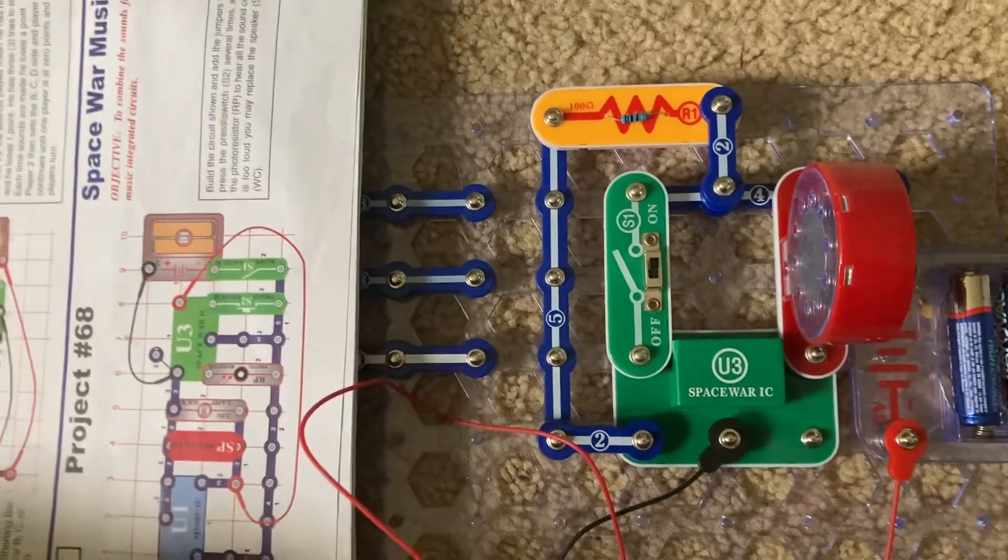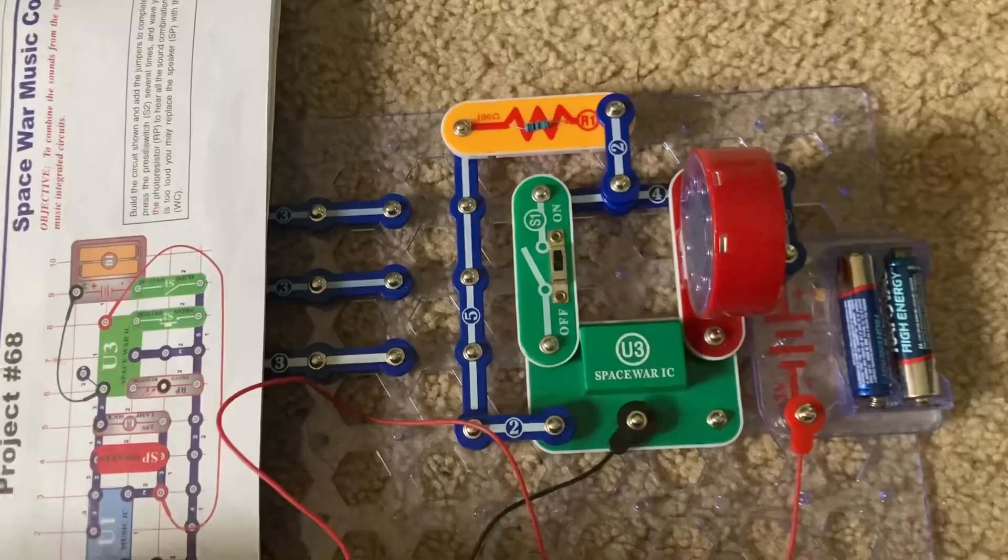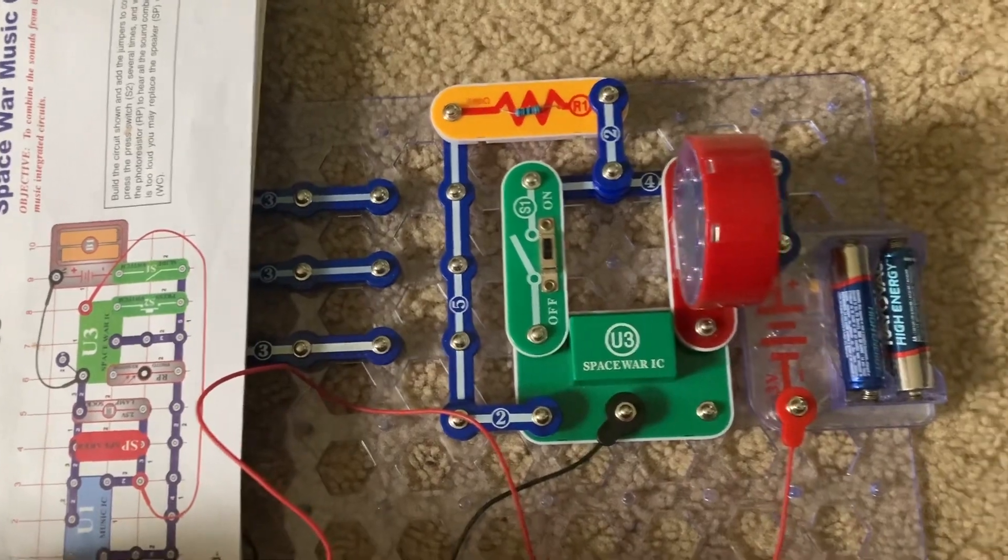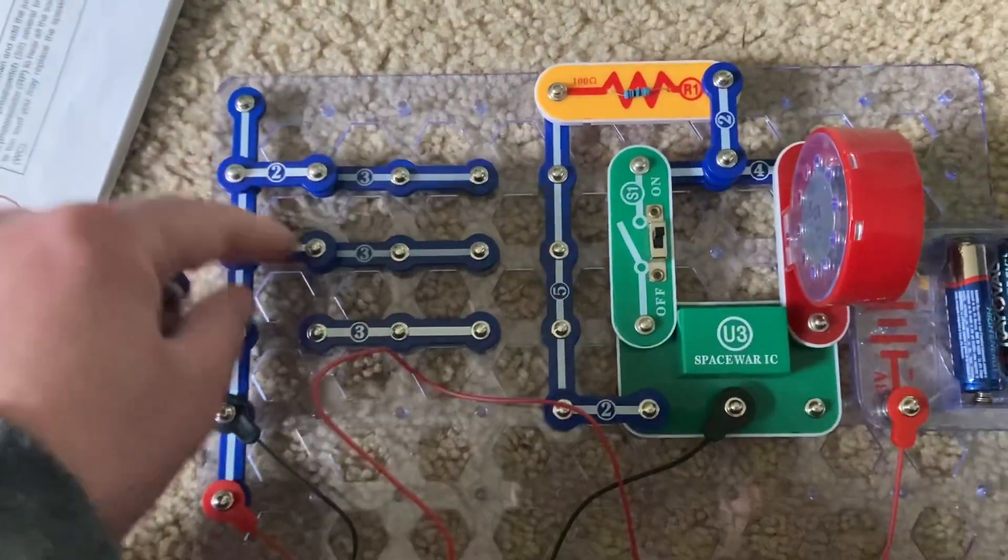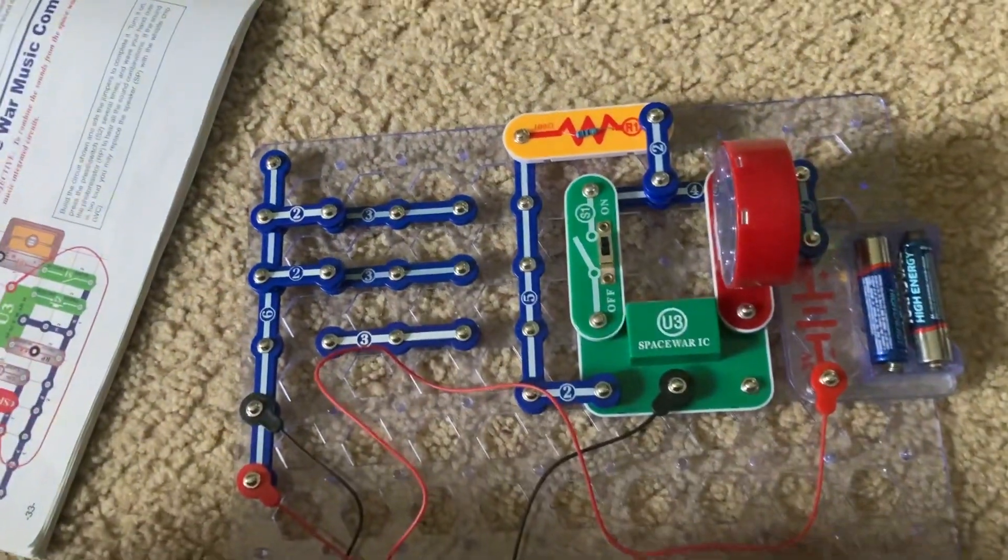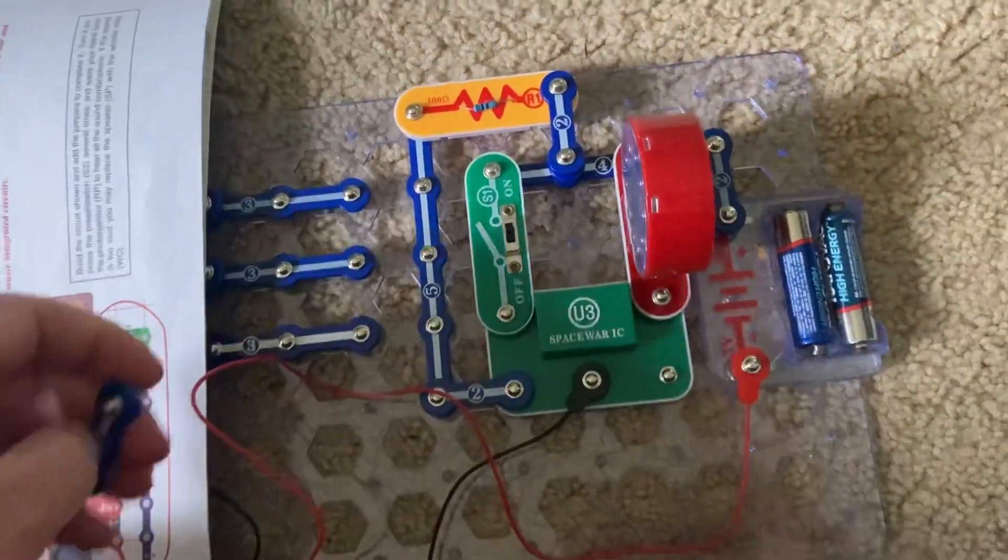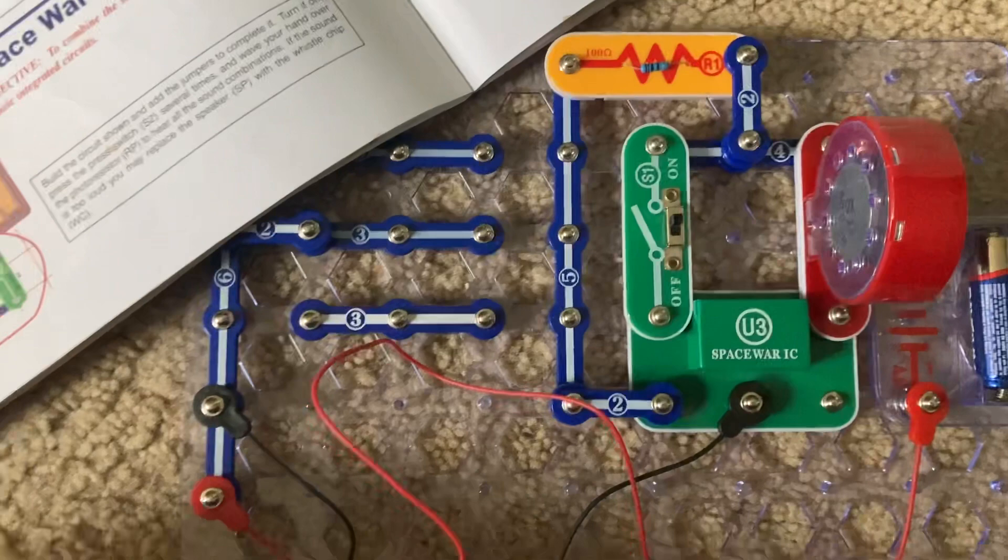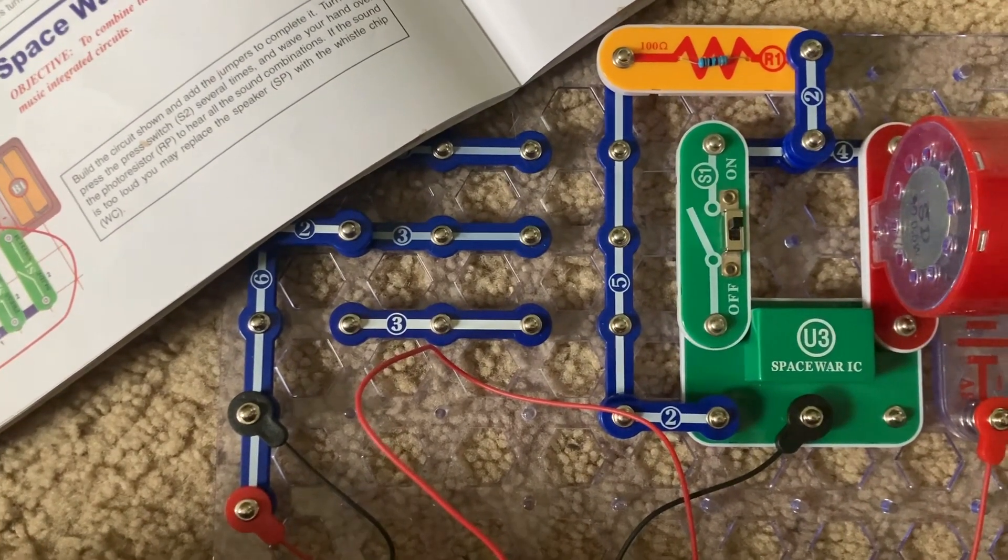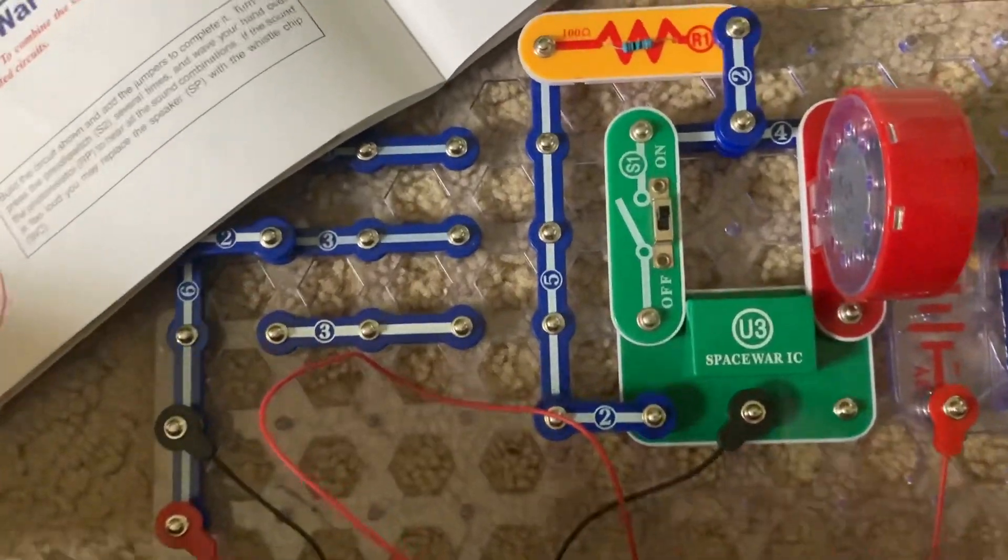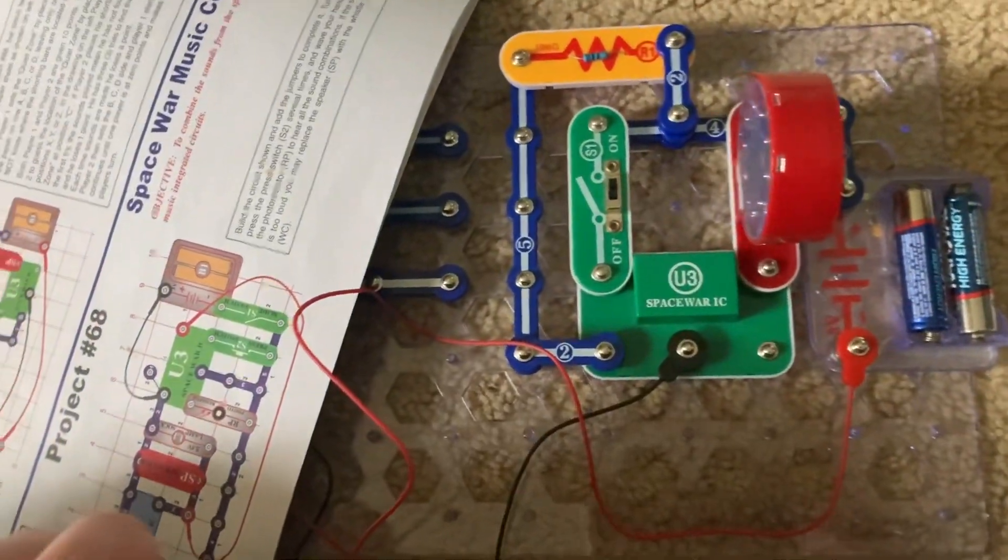And then the players will swap roles. Player two will then adjust the two-snap wires on the left side so that player one can guess the Quiet Zone. Play will continue until each player reaches zero points. They start with ten points each. Whoever reaches zero points first loses.